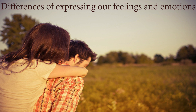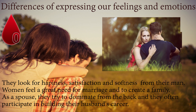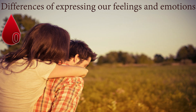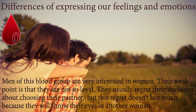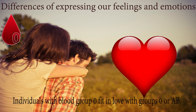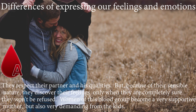Now the differences in expressing feelings and emotions. Blood group O — women look for happiness, satisfaction, and softness from their partner and feel a great need for marriage and family. As a spouse, they try to dominate from behind and often participate in building their husband's career. Men of this blood group are very interested in women but are not very loyal. Group O individuals fit best in love with group O or AB.